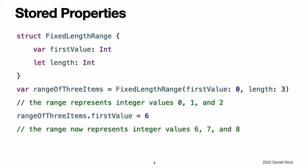You can also set and modify the initial value for a stored property during initialization. This is true even for constant stored properties. This example defines a structure called FixedLengthRange, which describes a range of integers whose range length cannot be changed after it is created. Instances of FixedLengthRange have a variable stored property called firstValue and a constant stored property called length, which cannot be changed once set.